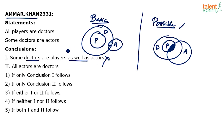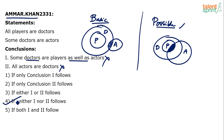All actors are doctors? False. From the basic diagram itself it is false. He is saying all actors are doctors, but I can see only some actors are doctors, not all of them. It can be drawn in that way — I can draw all actors are doctors, it is possible. But is it always true? No. So neither one nor two follows. Option four is the answer. Remember, both of these are possible.